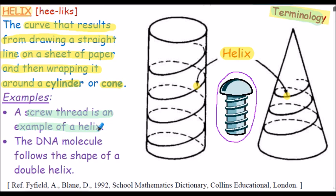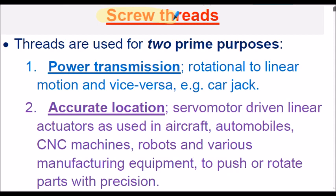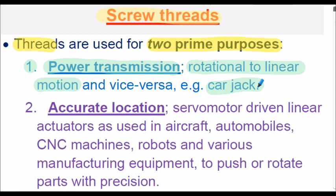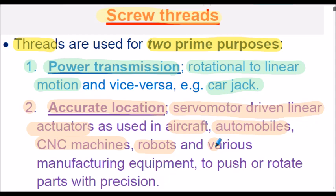Let's consider the purposes of screw threads. Essentially, threads are used for two prime purposes. Firstly, power transmission — that's inducing rotational to linear motion and vice versa, for example in a car jack. Or purpose two, to provide for accurate location, for example servomotor driven linear actuators as used in aircraft, automobiles, CNC machines, robots, and various manufacturing equipment. These can be used to push or rotate parts with great precision.